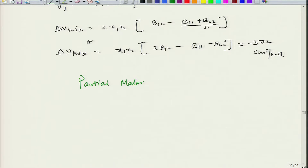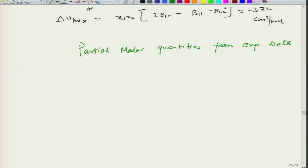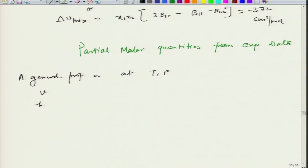If you have molar properties as a function of composition, then you can find partial molar quantities from the experimental data. Let us assume we have information of a general property E at a given temperature and pressure. E could be volume, could be enthalpy, or could be free energy.